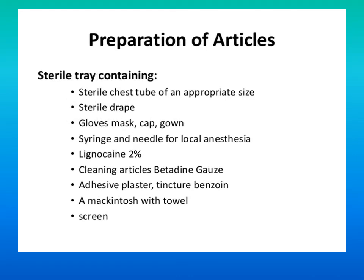Preparation of articles includes a sterile tray containing: a sterile chest tube of appropriate size, sterile draping sheet, gloves, mask, cap, gown, syringe and needle for local anesthesia, lignocaine 2%, cleaning articles, Betadine gauze, adhesive plaster, tincture benzoin, a mackintosh with a towel, and a screen.